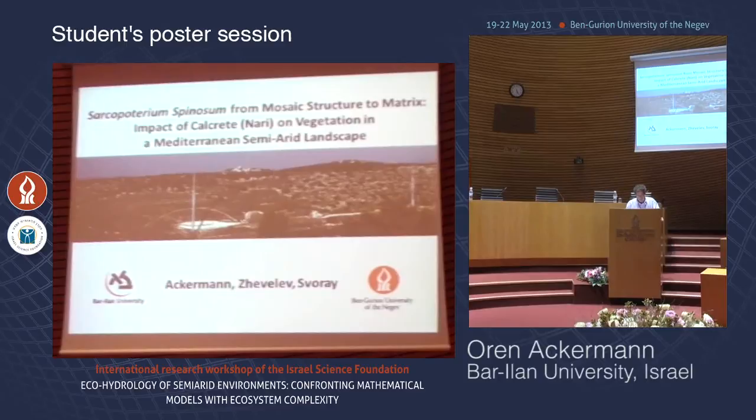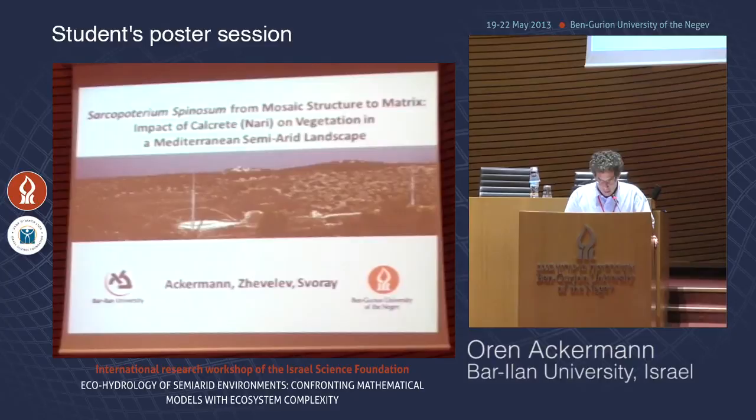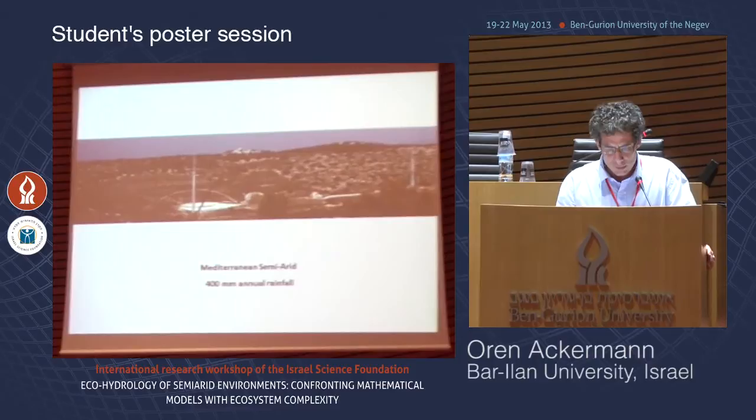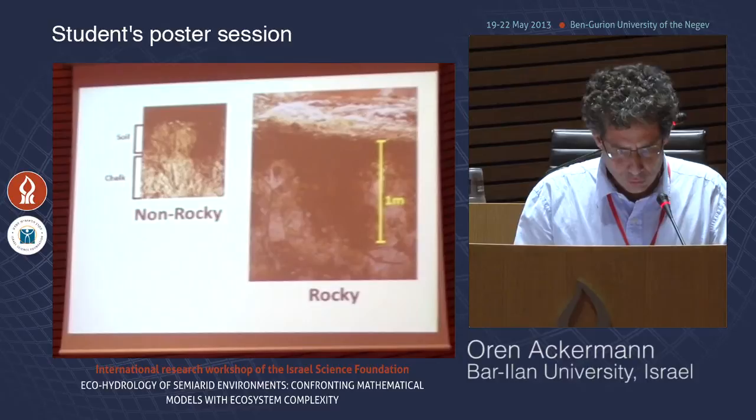Sarchopotherum spinosum: from mosaic structure to matrix — impact of calcrete nari on vegetation in a Mediterranean semi-arid landscape. This study was conducted in cooperation with Yelena Zhevlev and Tal Svoa. The study area is in the Judean foothill in central Israel, under Mediterranean semi-arid conditions. The surface of the slope is characterized by two main structures: non-rocky and rocky.